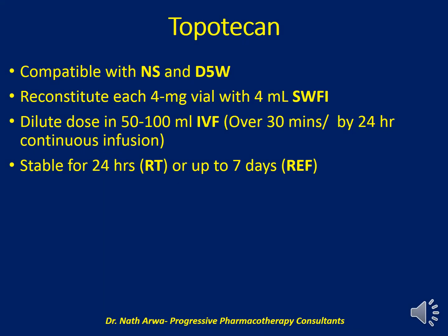Topotecan is compatible with both 5% dextrose in water and normal saline. Begin by reconstituting each 4 mg vial using 4 ml of water for injection. The dose should then be diluted using 50 to 100 ml of IV fluid of choice. After homogenizing, infuse over 30 minutes. We can also choose to administer it via a 24-hour continuous infusion. Such solutions are stable for 24 hours at room temperature and for up to 7 days under refrigeration.